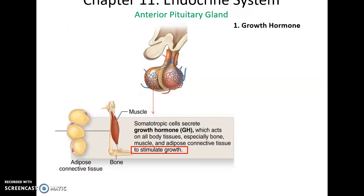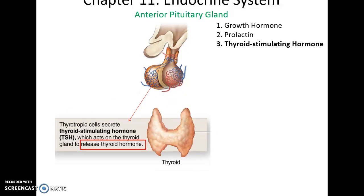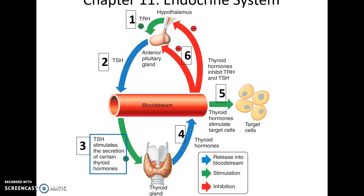The anterior pituitary gland produces growth hormone, which stimulates growth in many body tissues including muscles, blood, and adipose tissue. It also produces prolactin, which stimulates milk production in the mammary glands, and thyroid-stimulating hormone, which stimulates the thyroid to release its thyroid hormone. For instance, thyroid hormone-releasing hormone from the hypothalamus stimulates the anterior pituitary to release TSH, which reaches the thyroid gland and causes it to release thyroid hormone. Higher levels of thyroid hormone then negatively feed back to suppress the hypothalamus and anterior pituitary gland.